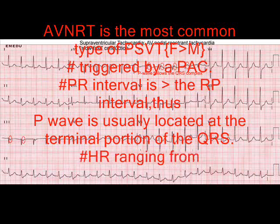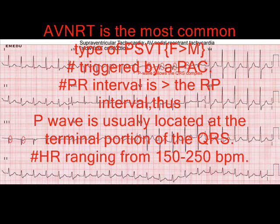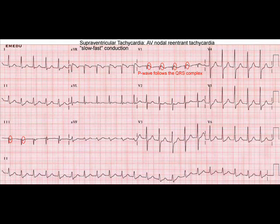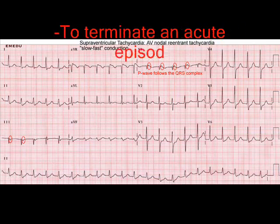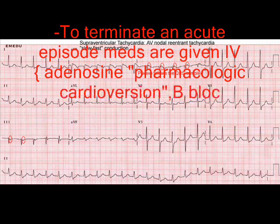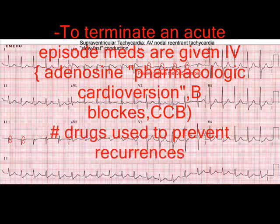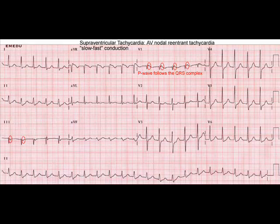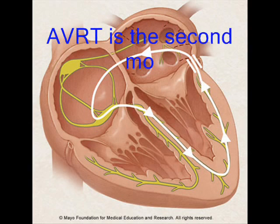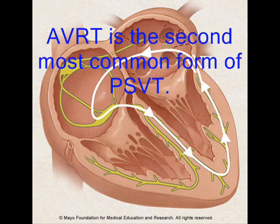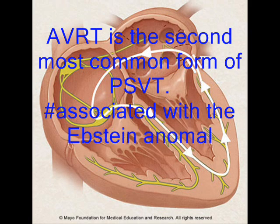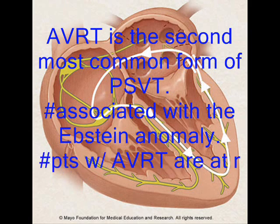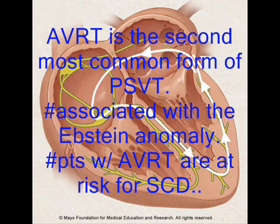In AVNRT, the PR interval is longer than RP, which is why the P wave is usually located at the terminal portion of the QRS. Heart rate ranges around 150 to 250 bpm. To terminate an acute episode, adenosine is given as pharmacological cardioversion. Drugs used to prevent recurrence are given orally: beta blockers, calcium channel blockers, and digoxin.